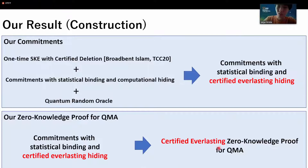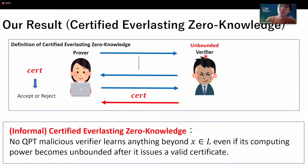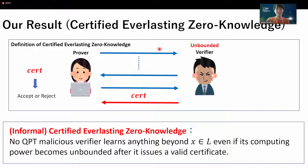So your question is about the definition of certified everlasting zero-knowledge? Yes — you said something about the verifier being supposed to certify something, but I missed that. The certificate shows that the verifier deletes the information received from the prover. That is my answer. Is that okay?